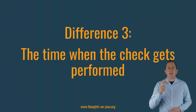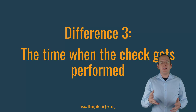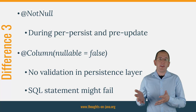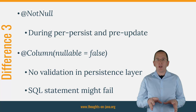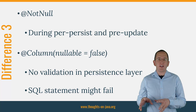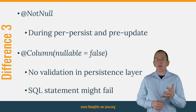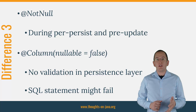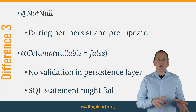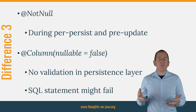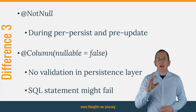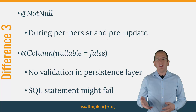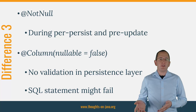Difference 3: the time when the check gets performed. The NotNull annotation tells your BeanValidation implementation to check that the attribute is not null when the pre-update or pre-persist lifecycle event gets processed. If the validation fails, Hibernate will not execute any SQL statement. The Column annotation with nullable false only adds a NotNull constraint to the table definition — Hibernate will not perform any validation on the entity attribute. Hibernate just executes the SQL update statement and the database will validate the constraint. If the entity attribute is null, the SQL statement will fail.